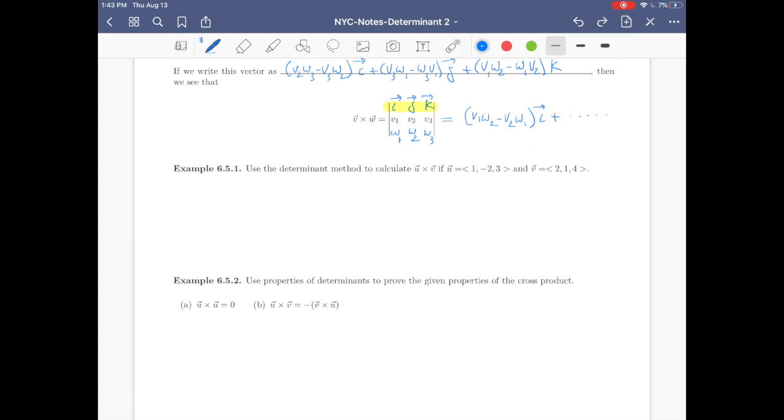Which is using determinants. What you do is first row, always you put i j k. And in the second row, you respect the order, you put the coordinates of the first vector. And in the third row, you put the coordinates of the second vector.